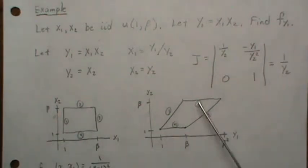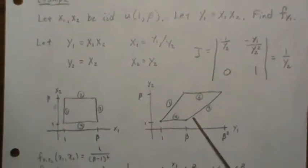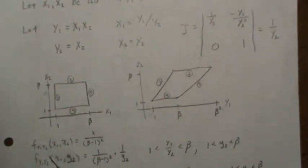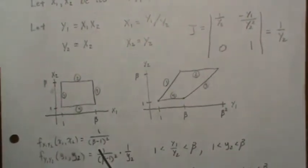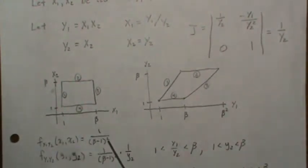So the f of x1, x2 is just 1 over (beta minus 1) squared because they're independent, so it's the product of those two uniforms.